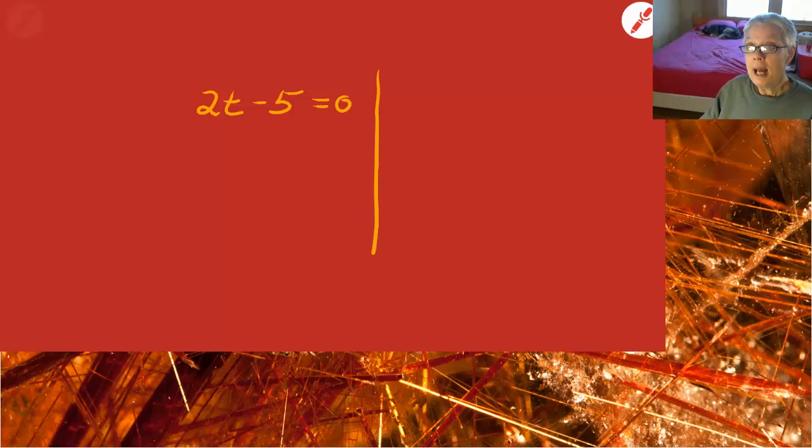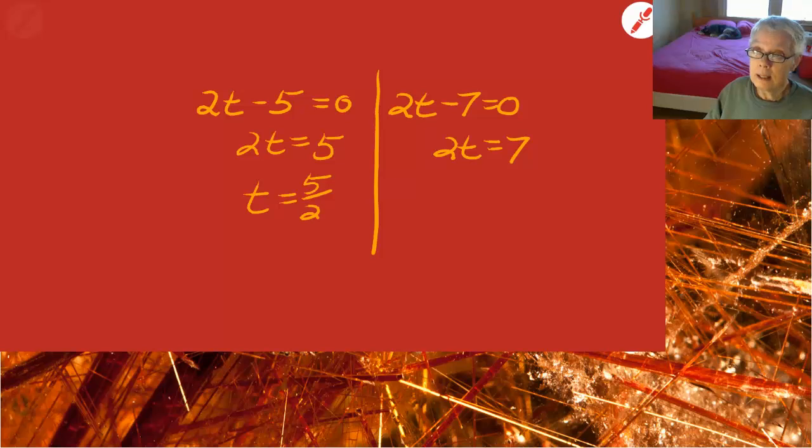Now we set each factor equal to zero and solve the resulting little equations. So 2t minus 5 equals zero and 2t minus 7 equals zero. 2t equals 5 and 2t equals 7. So t equals 5 over 2 seconds or 2.5 seconds and t equals 7 over 2 seconds or 3.5 seconds.